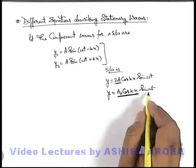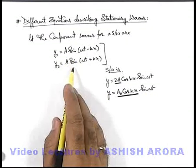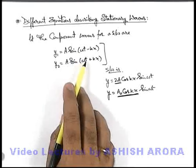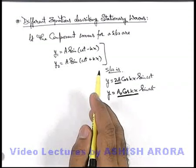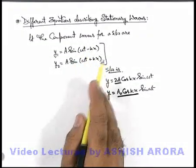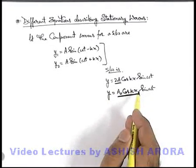Now this is the equation we are getting when these two waves superpose, but there might be some phase difference exist between the two waves. One can be this and the other wave can have an initial phase α or the difference with first wave with respect to first wave it is α. Then in this situation the equation may change.